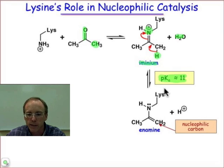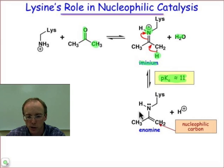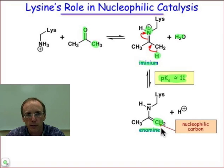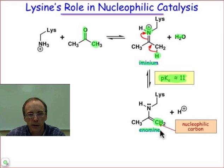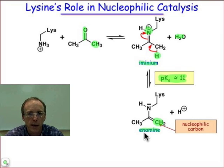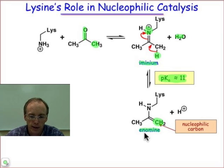A pKa of 11 means that we can deprotonate that under physiological conditions to make the corresponding enamine. Doing so generates a nucleophilic carbon at the α position, so rather than forming the enolate, we end up making the enamine — a nucleophilic atom nonetheless, but one that can be made without having to form that very basic enolate anion.